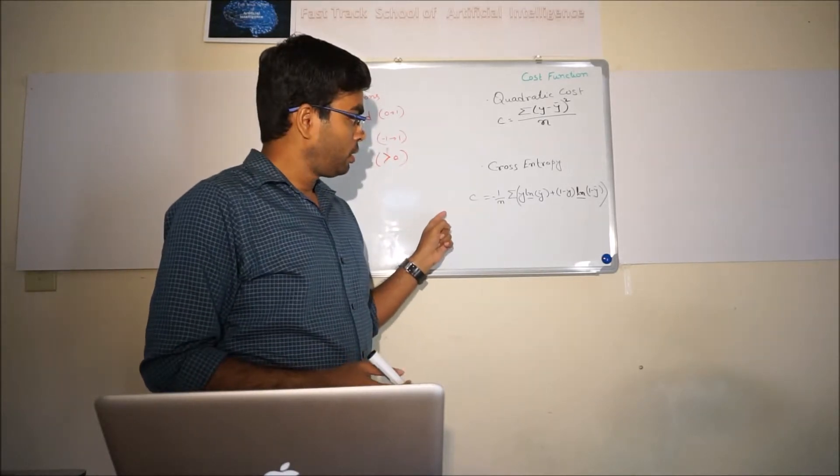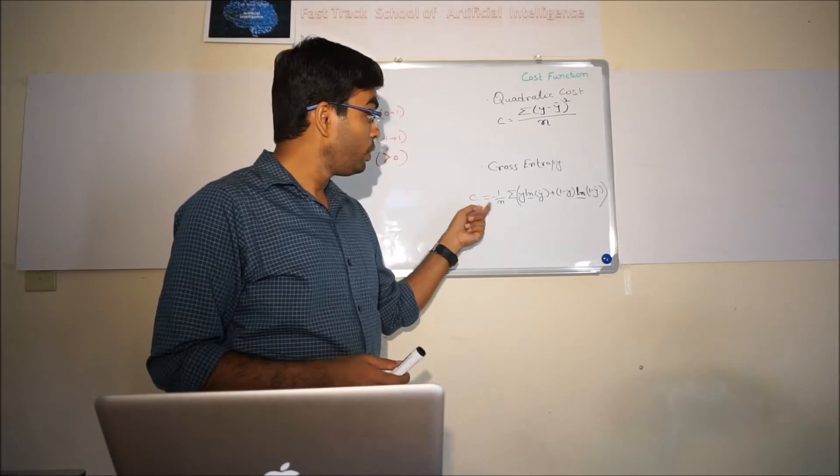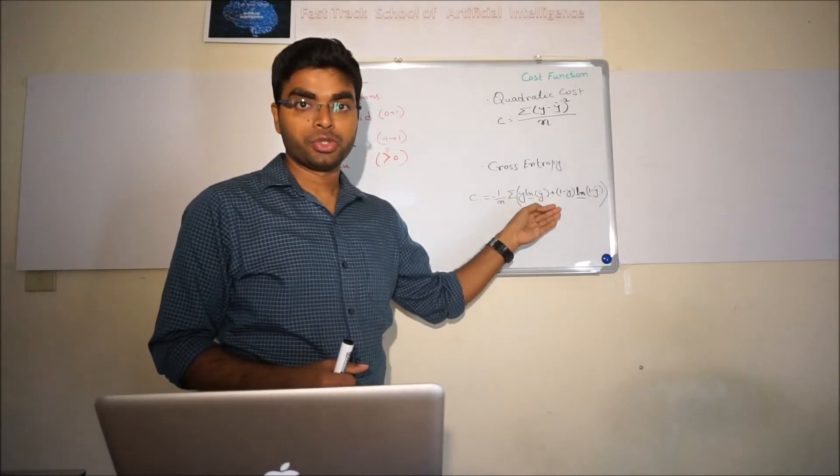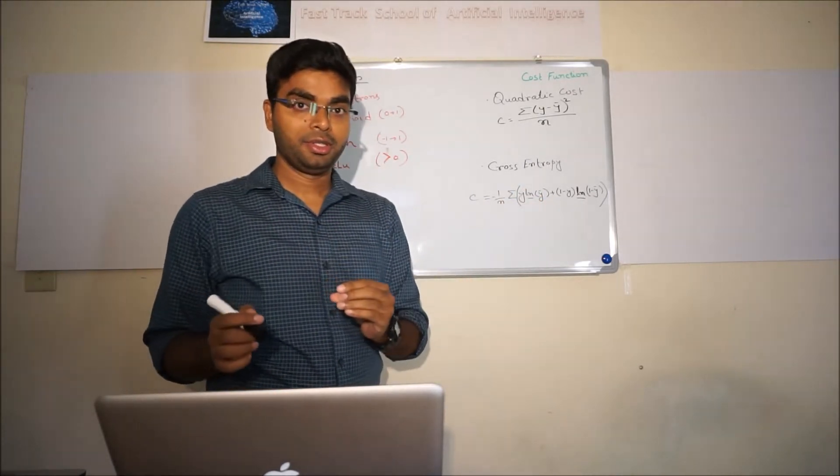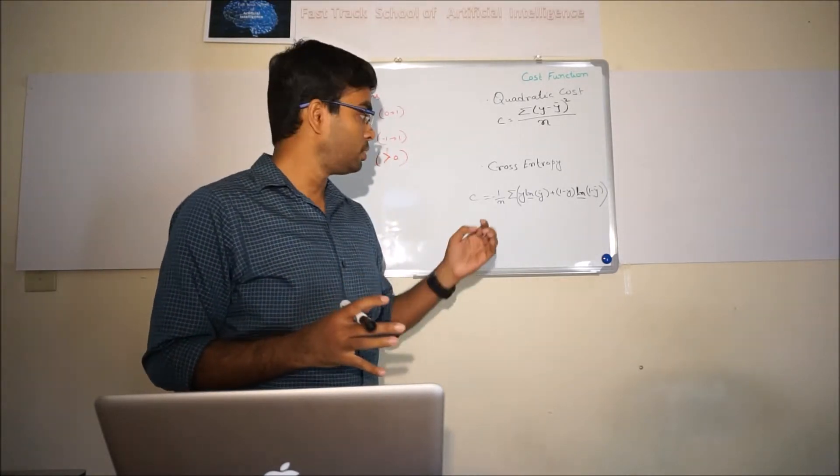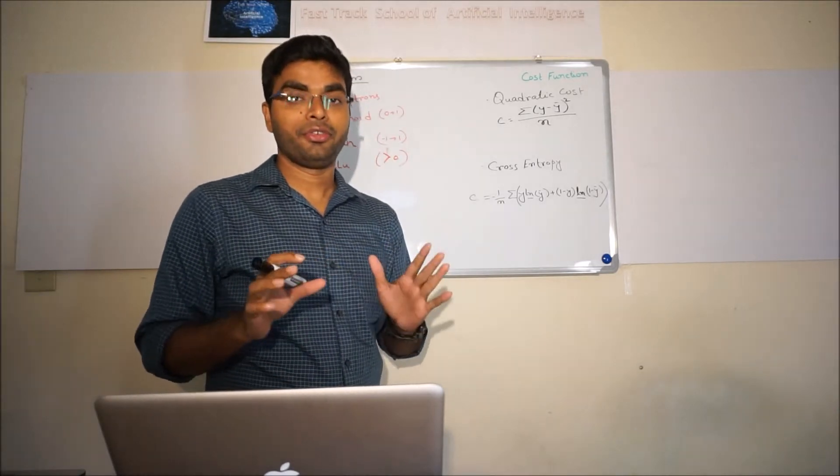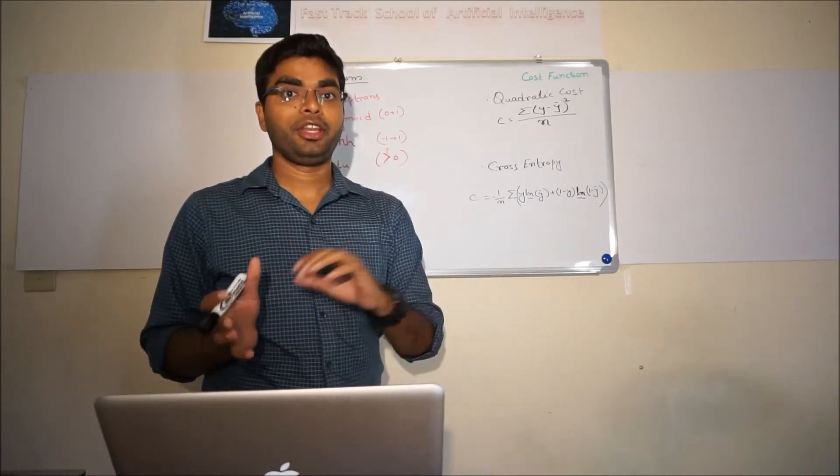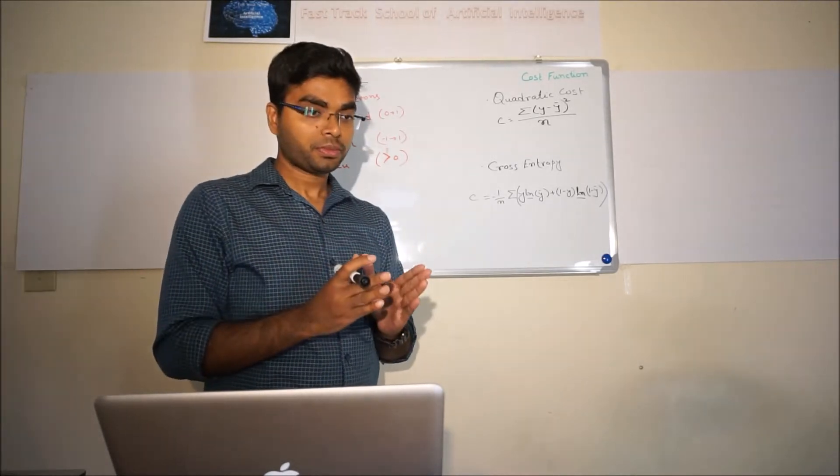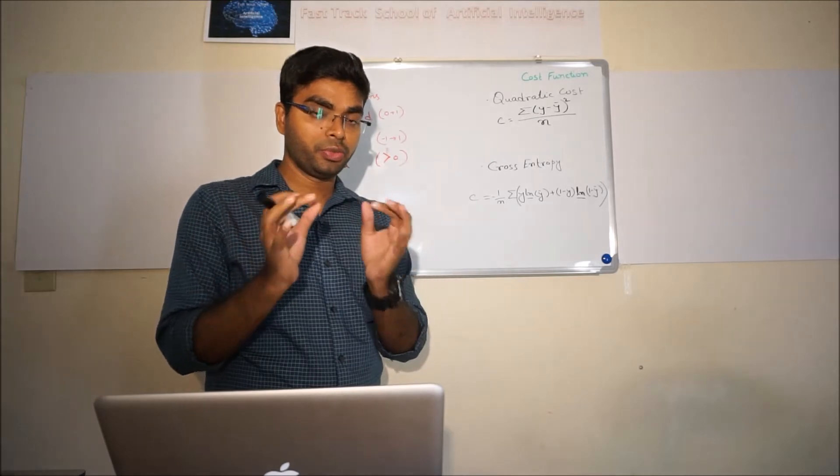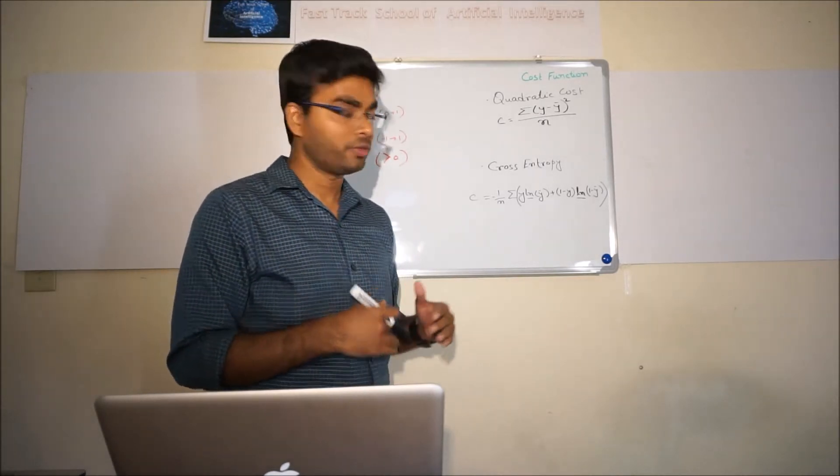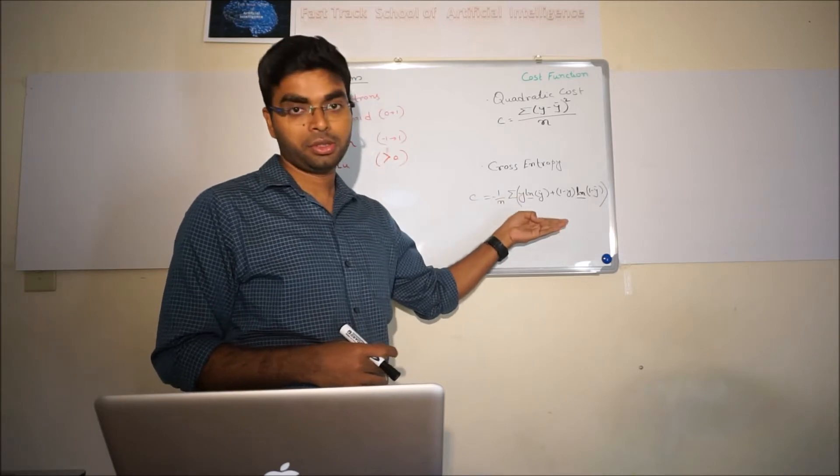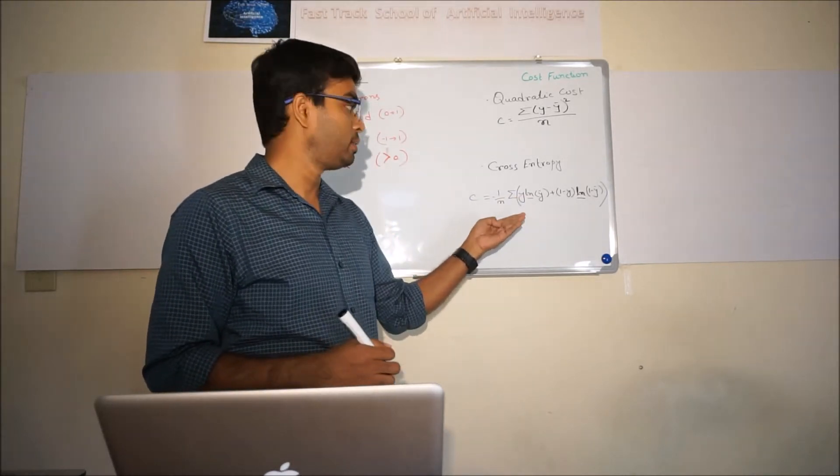The biggest advantage is that when we're doing gradient descent, the derivative of this particular cost function will help to learn the weights and biases very fast. The bigger the errors are, the learning process will happen very fast. When we reach toward very close errors, the learning process will slow down a little bit. With this advantage, this is one of the most popular cost functions currently available, and it's being widely used recently for multi-class or binary classification problems.